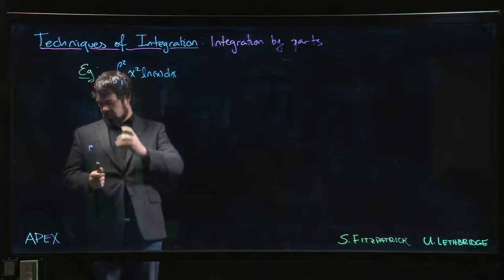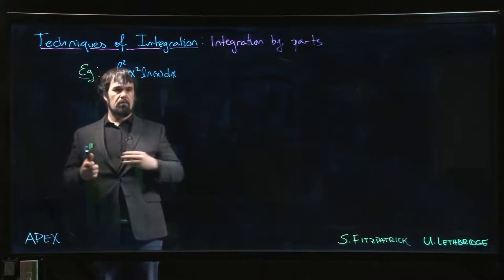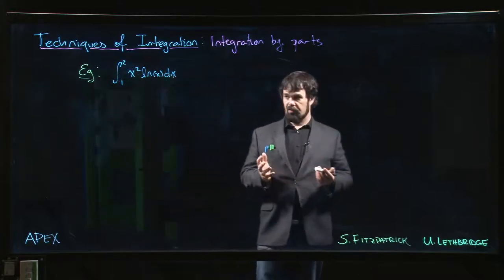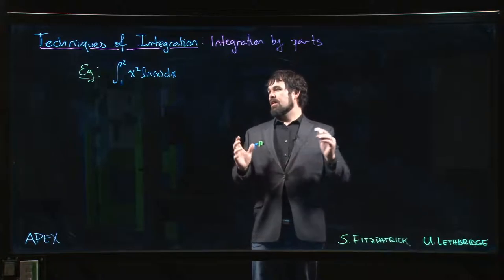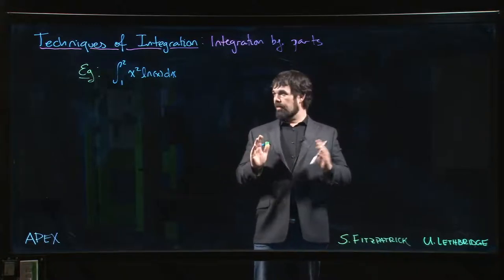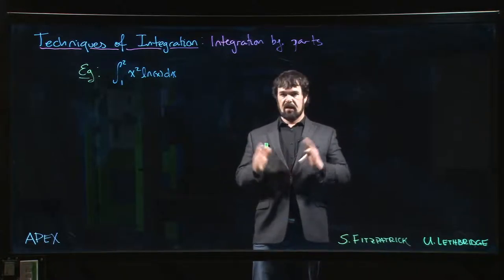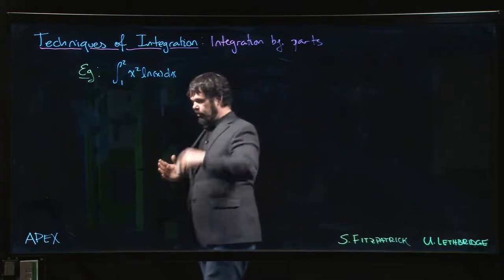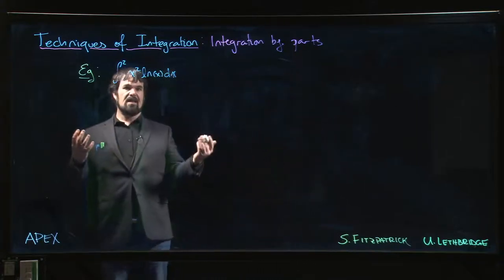Once you get into more advanced math and sometimes certain areas of theoretical physics, there are a lot of problems where when you're doing integration by parts you rely on the fact that that boundary term tends to vanish when you plug in the limits of integration. For the UV part, things go away.